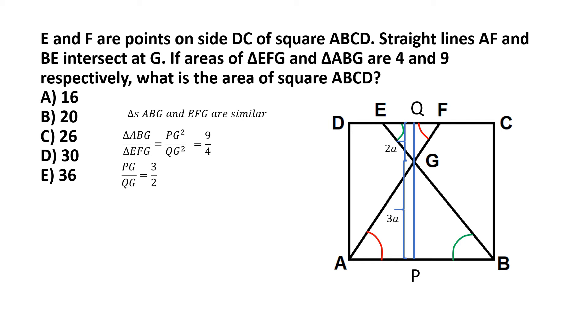So that makes PQ, the length of PQ equal to 5a, and we know that the length of PQ should be equal to the side AD or side BC of the square because they're parallel. So in effect they should be equal. So I can derive from this that the side AD of the square is equal to 5a. It's simply the sum of PG and QG.